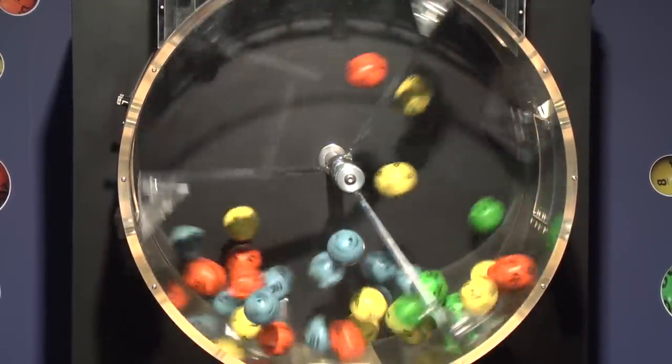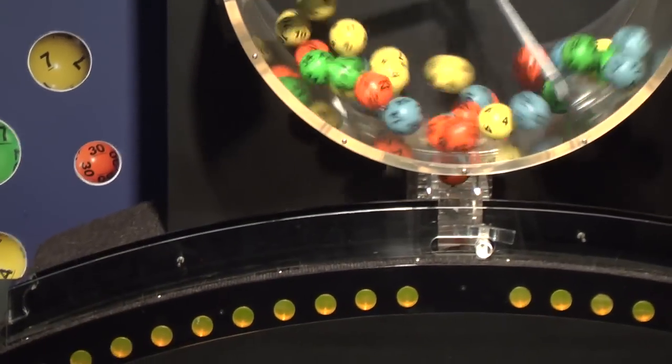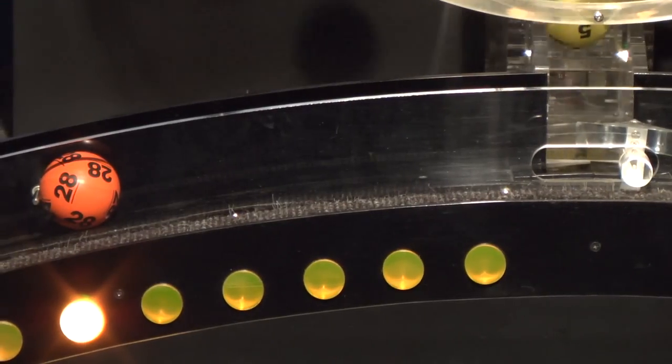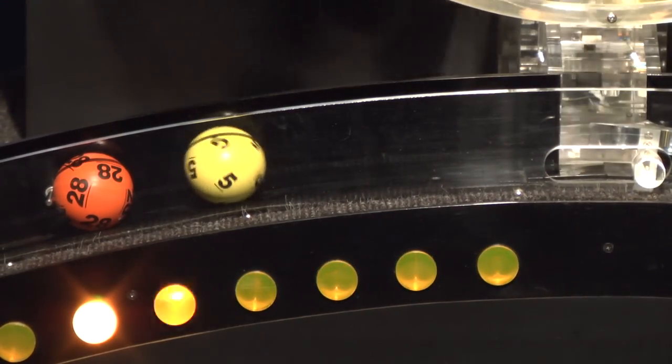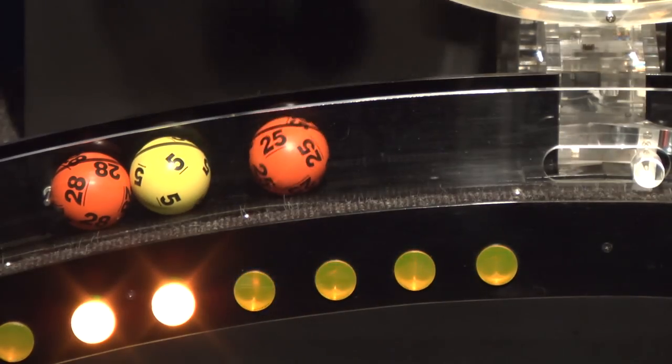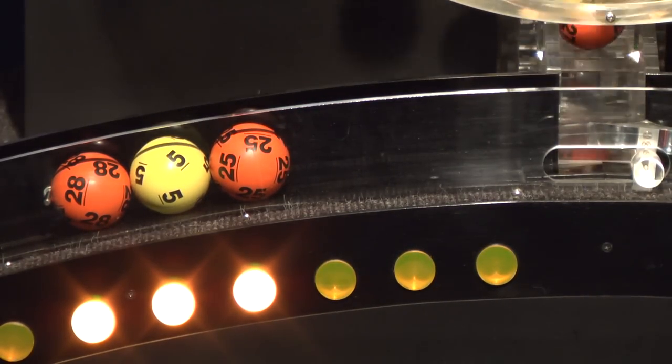Now let's see how you did in tonight's drawing. First number is 28, following that is 5, and then 25. If you match these three numbers,